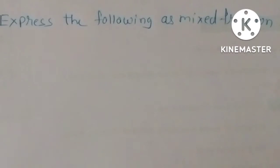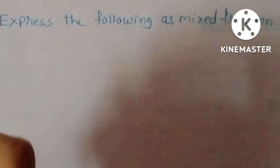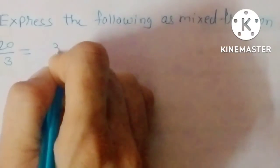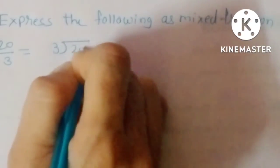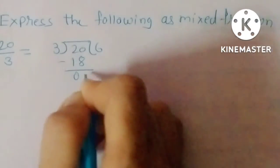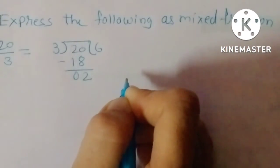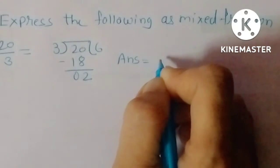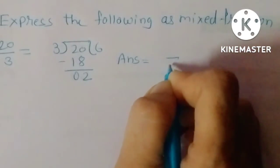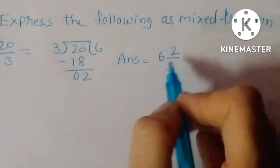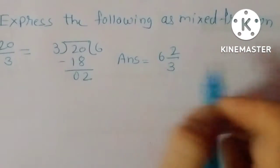Express the following as mixed fractions. 20 upon 3. 3 goes into 20: 3 sixes are 18. 20 minus 18 equals 2. So the answer is 6 remainder 2, meaning the mixed fraction is 6 and 2/3.